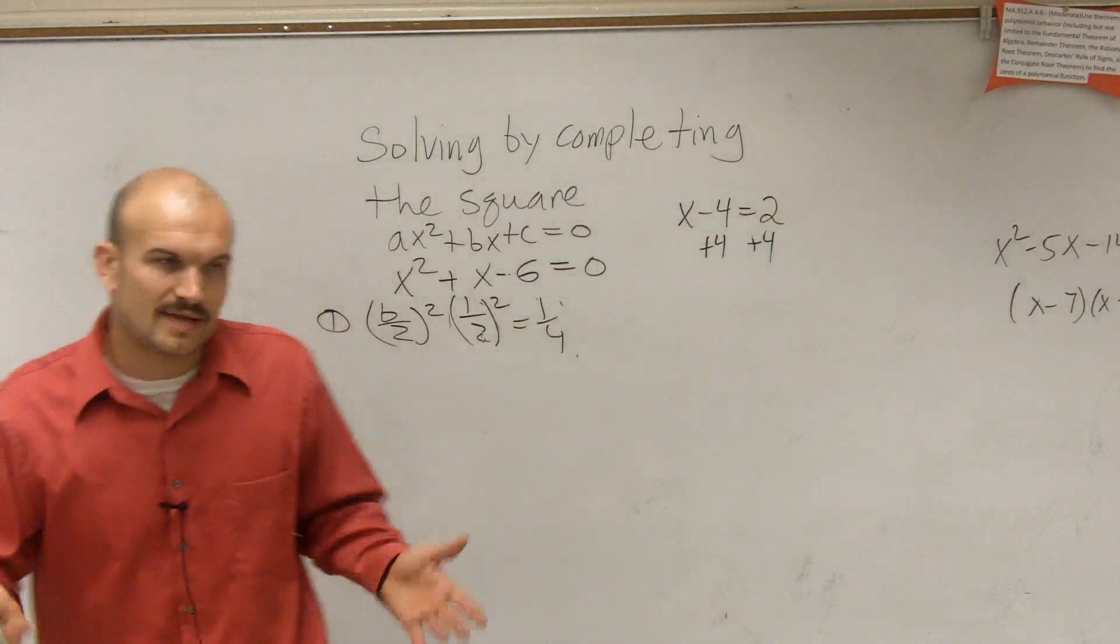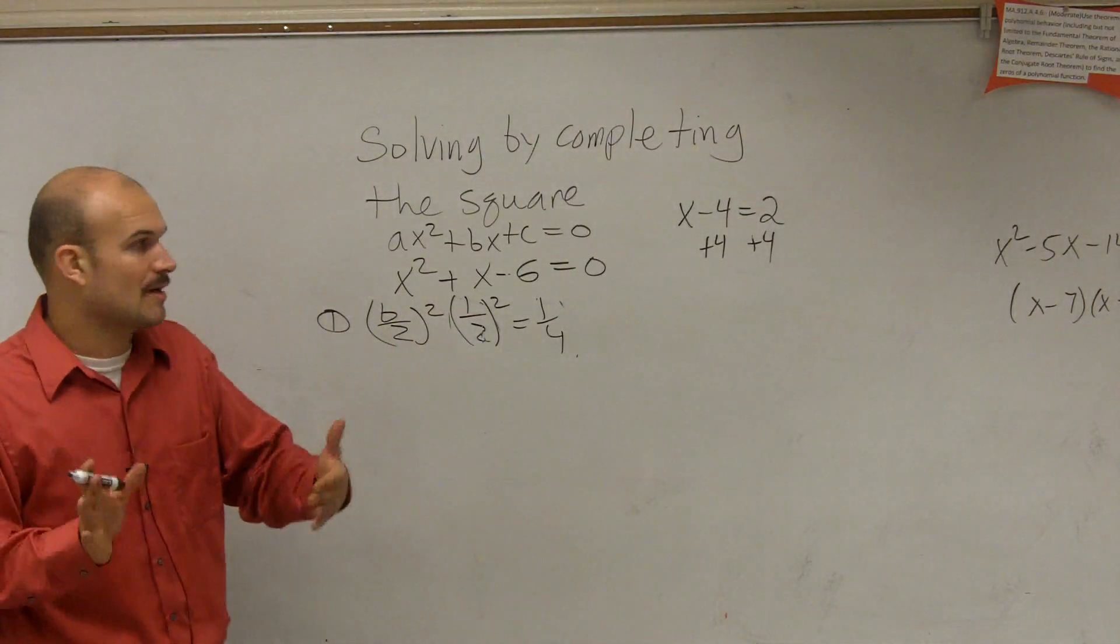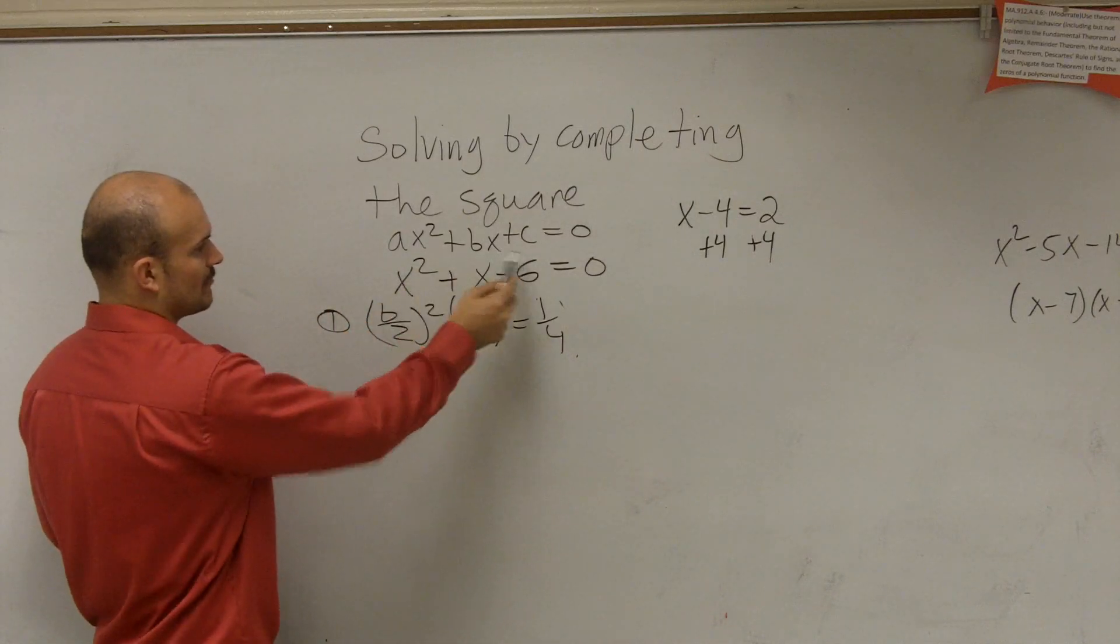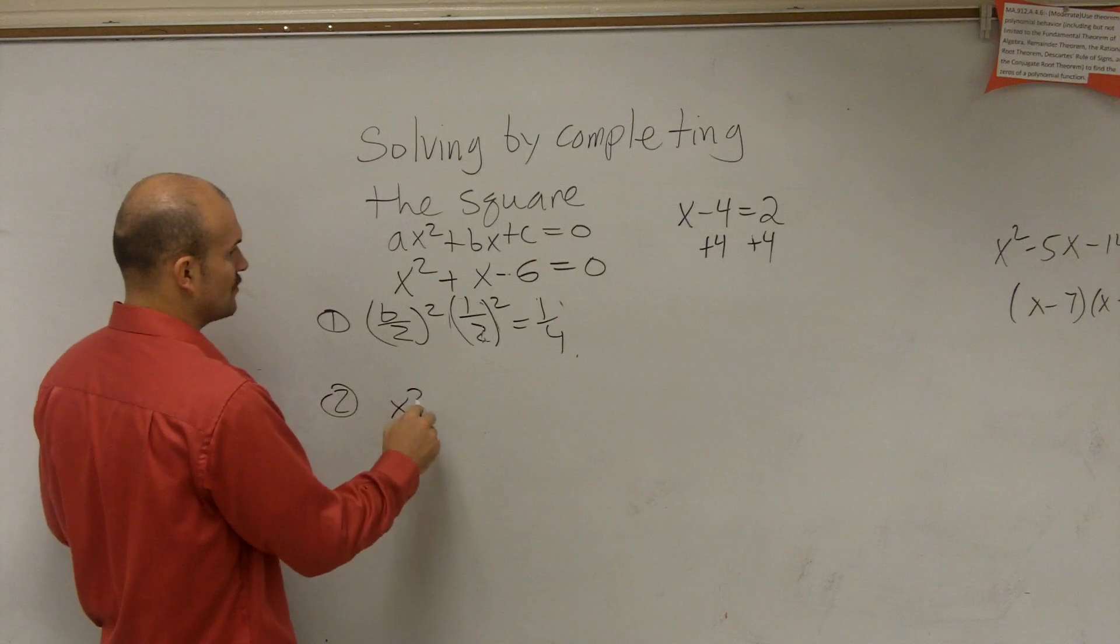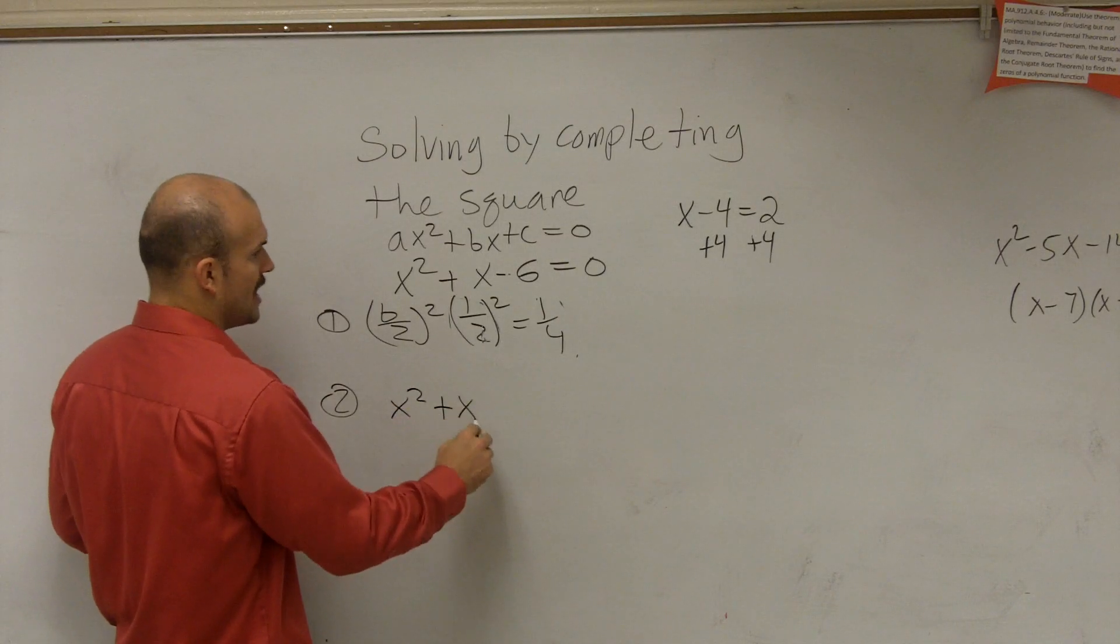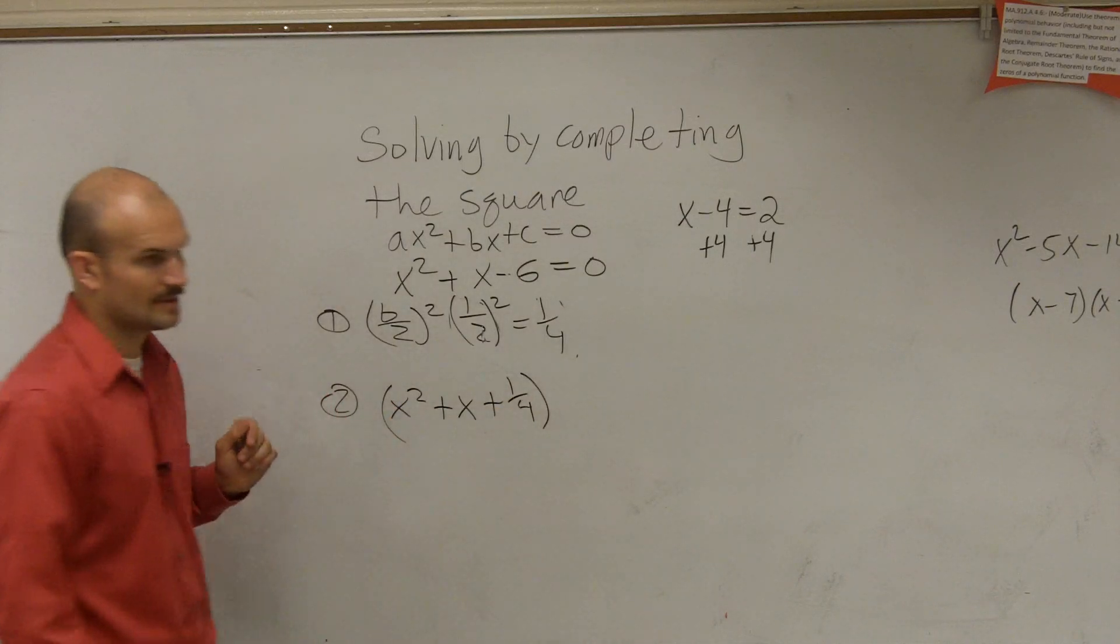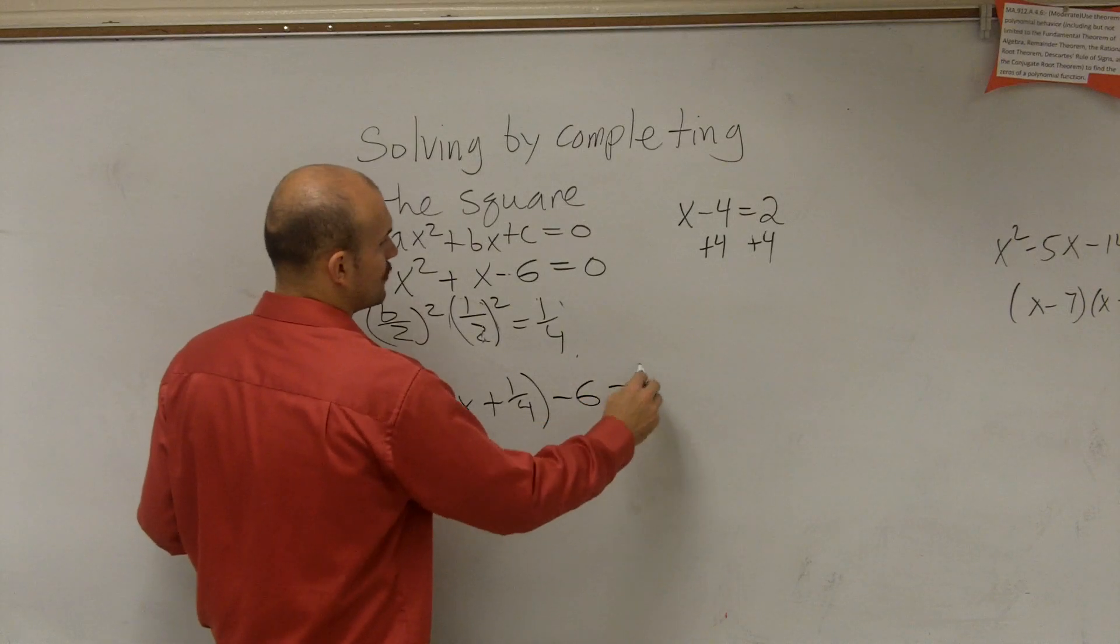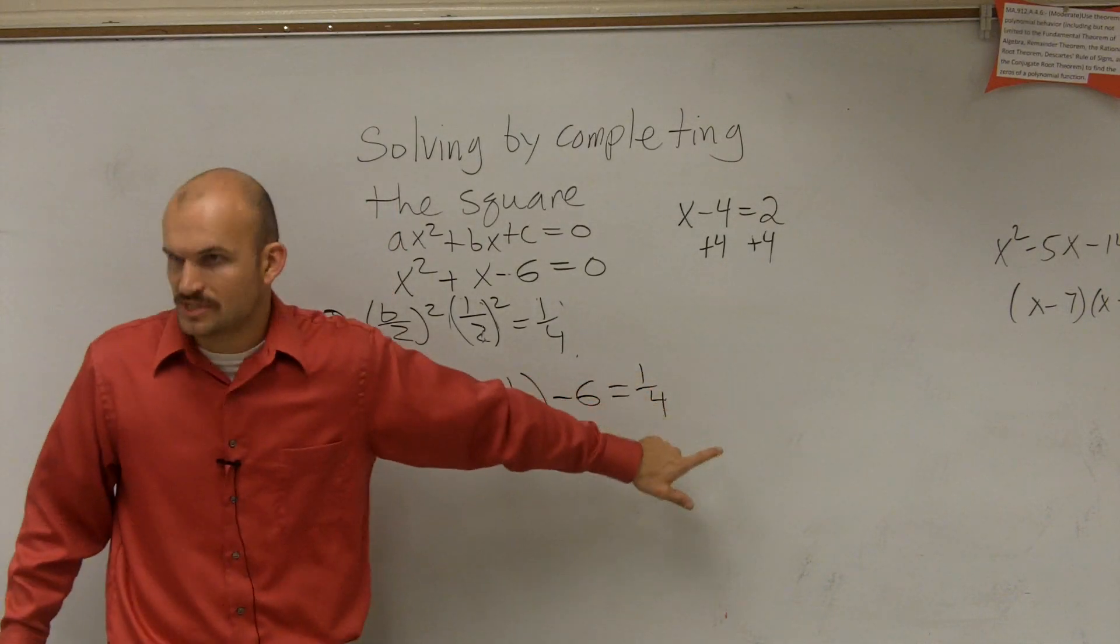Since I'm solving, that's what I'm going to want to do. You could also add and subtract it on the same side, but I want to add it on both sides of the equation. So therefore, I'm going to rewrite my equation. So step two is now you're going to write x squared plus x plus 1 fourth minus 6 equals 1 fourth.